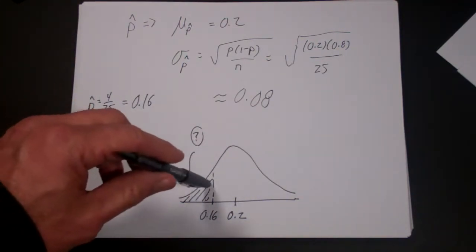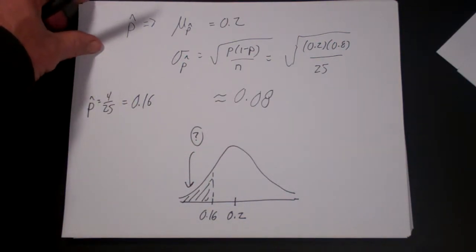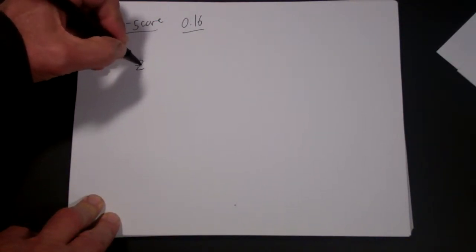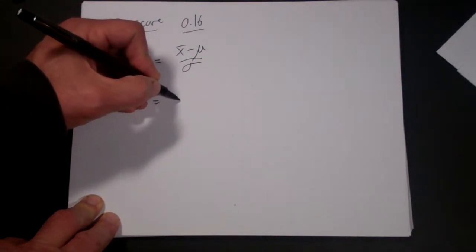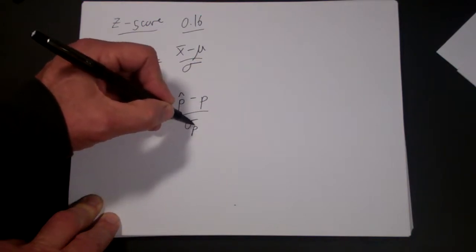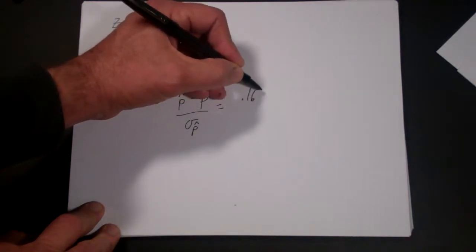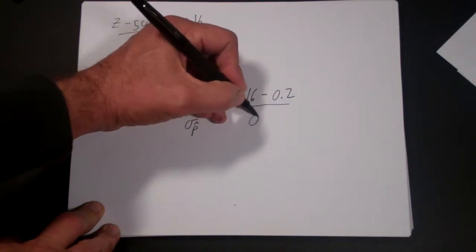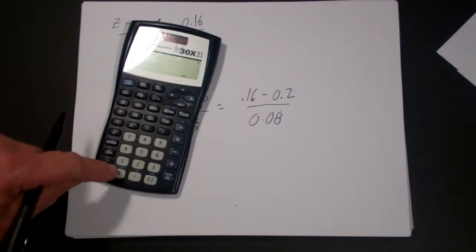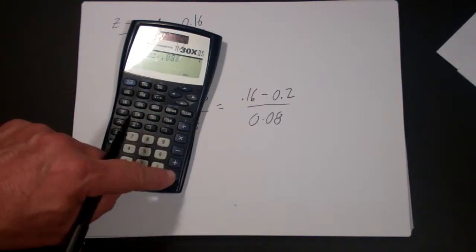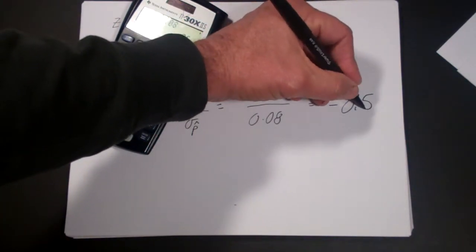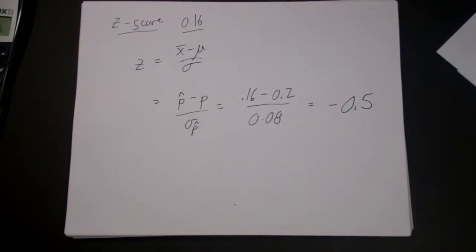In this normal distribution, what's the probability that we get a p hat which is less than 0.16? Let's go ahead and come up with a z-score, or a standardized value, of 0.16. In general, the z-score formula would be x bar minus mu over sigma. With p's, that's going to be p hat minus p over sigma p hat. In this case, it's 0.16 minus 0.2 over 0.08. Let's plug that in our calculators: 0.16 minus 0.2 divided by 0.08 is minus 0.5. That's our standardized value or our z-score.